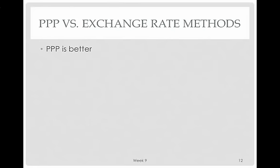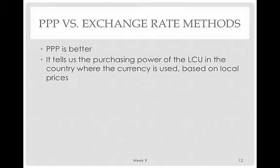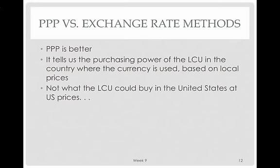PPP is better, and when you have the choice, you want to use the PPP measure. It tells us the purchasing power of the local currency unit in the country where the currency is used, based on local prices — not what the local currency unit could buy in the United States at US prices. It's really a measure of the command of the dollar amount in your own country.